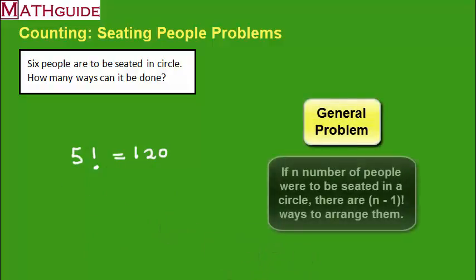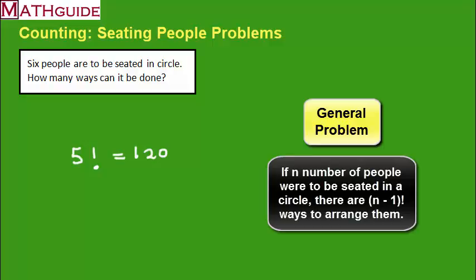So in general, how does this work? What if I were to have to seat n number of people? If we were going to seat n people in a circle and I want to know how many ways could I arrange them around that table, well, it turns out there's n minus one factorial ways of doing that. And that's how it looks in general.